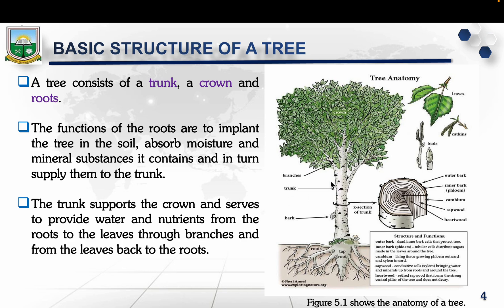The crown consists of the branches and leaves. The crown is where photosynthesis happens, producing the energy that sustains the tree's growth. Now let's look at the anatomy of a tree — specifically the inner cross-sectional structure. If you cut a tree cross-sectionally and look at it from the top in a plan view, you can see the tree is made up of three main parts.